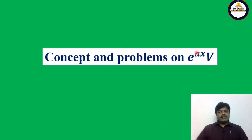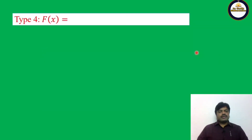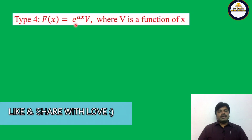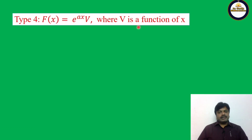Let us see the concept. This is Type 4. f(x) = e^(ax) into v, where v is a function of x. We can guess v — either it is a trigonometric function or algebraic function. That means sin x, cos x, or x^m.